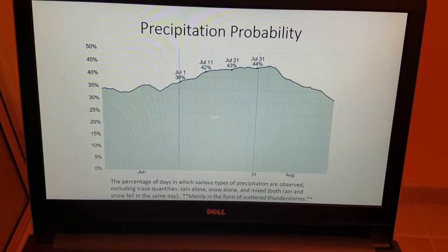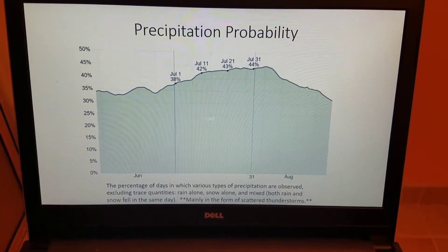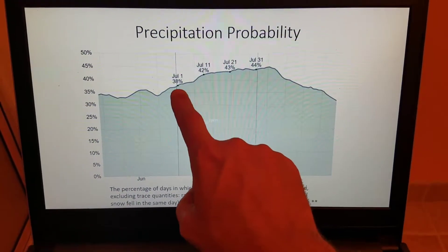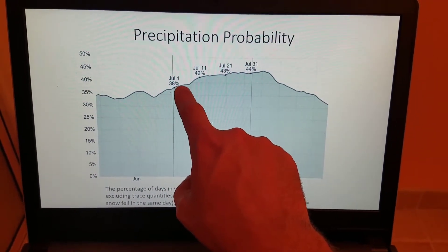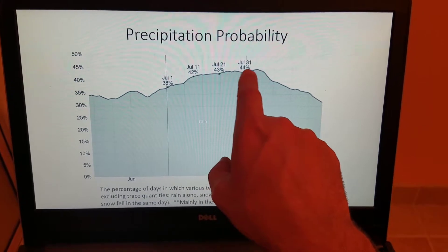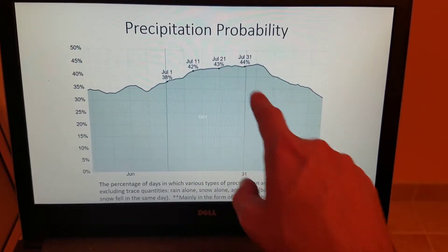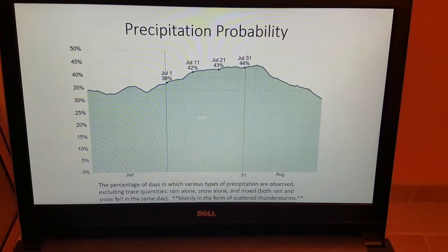Precipitation probability. This is your chances of precip on various days throughout the month. Beginning of the month, you're looking at about a 38% chance of some type of precipitation. And then that increases slowly throughout the month to a 44% chance of precipitation by the end of the month.